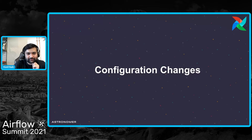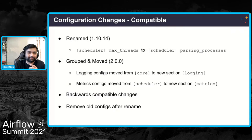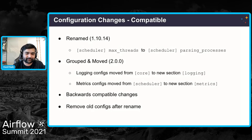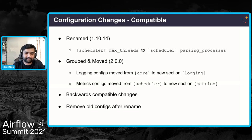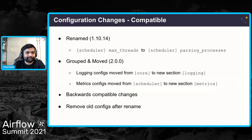Next are configuration-related changes. We renamed 'max_threads' to 'parsing_processes' for ease of understanding, and backported it to 1.10.14 as well. You could keep using 'max_threads' in 2.0 — it will show a deprecation warning — but I'd suggest just switching to 'parsing_processes' to remove any confusion.